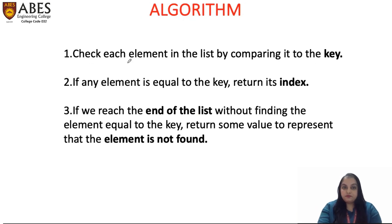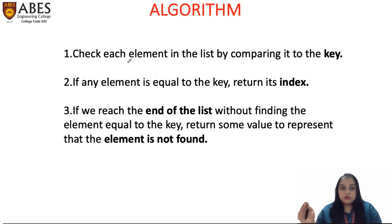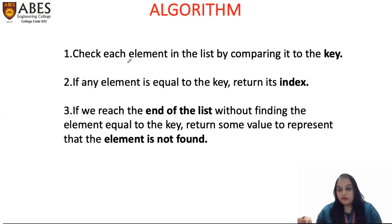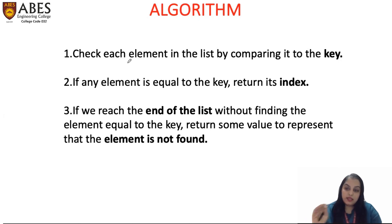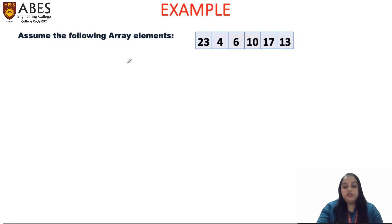Now we come to the algorithm. Basically we check for each element in the list, comparing it to the key element that we want to find in our array whether it exists or not. If any element is equal to that value, then we can say at that particular index it is found. If not matched and we have reached the end of the array without finding the element, we can say the element is not found. This is the general logic behind linear search.